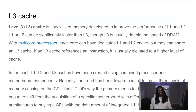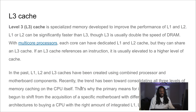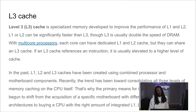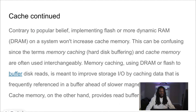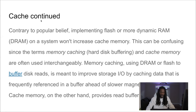In the past, L1, L2, and L3 have been created using combined processes and motherboard components. Recently, the trend has been towards consolidating all three levels of memory caching on the CPU itself. Because we have more powerful processors nowadays, it makes more sense to package these things all in one. That's why the primary means for increasing cache size has shifted from acquiring a specific motherboard with different chipsets to buying a processor with the right amount of integrated L1, L2, and L3 cache.